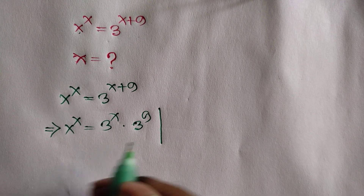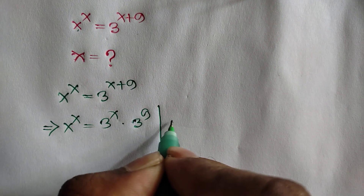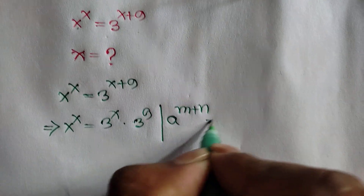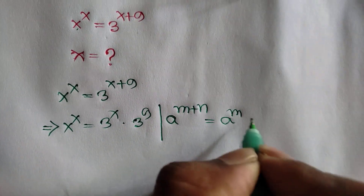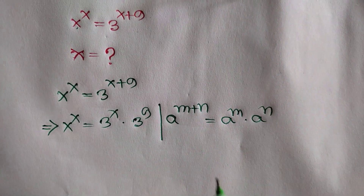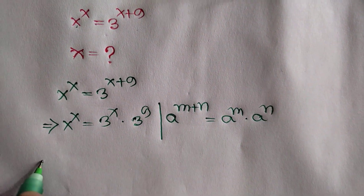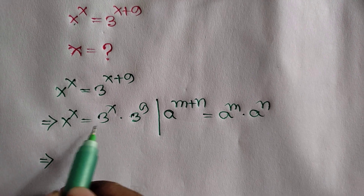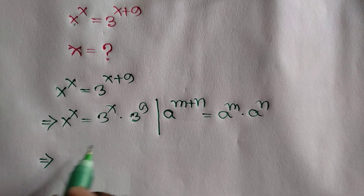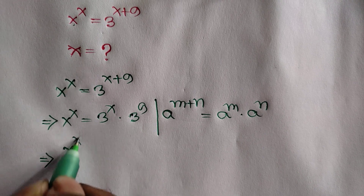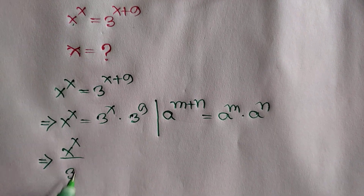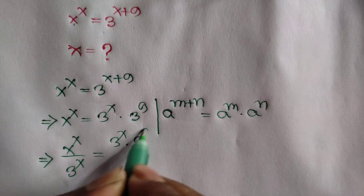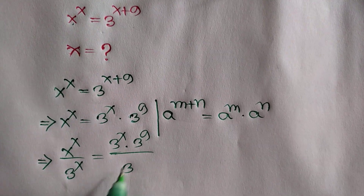We can apply the exponents formula: a to the power m plus n is equal to a to the power m times a to the power n. Now, dividing by 3 to the power x on both sides, we can write x to the power x over 3 to the power x is equal to 3 to the power x times 3 to the power 9 over 3 to the power x.